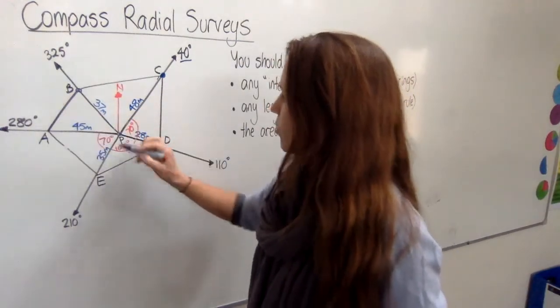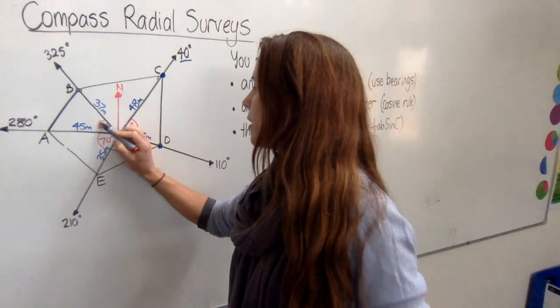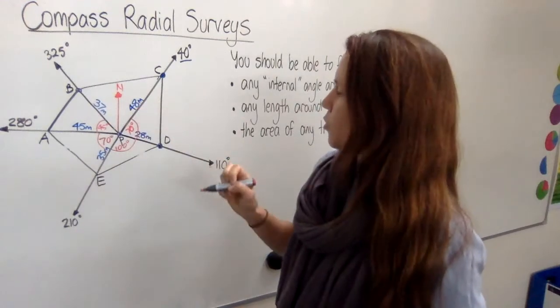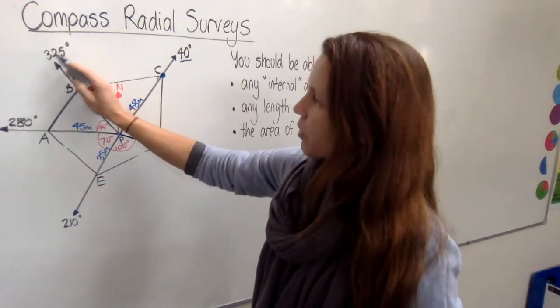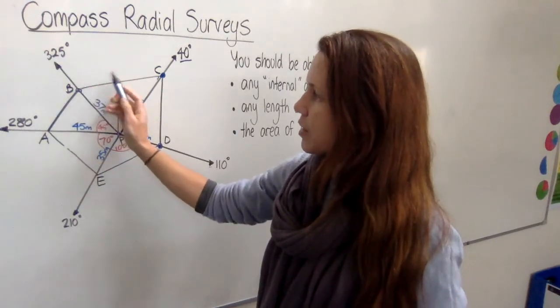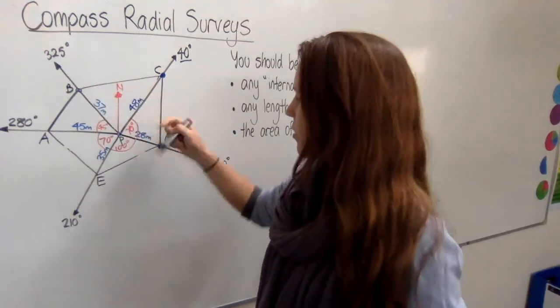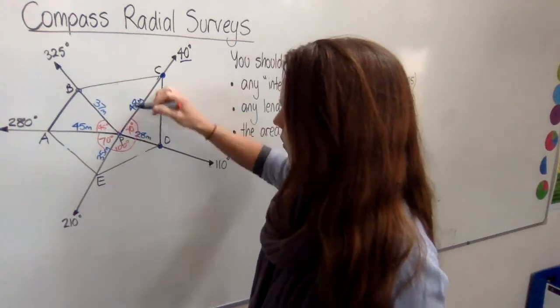From 280 up to 325 I've got 45 in there. This one at the top is a tiny bit more tricky, but this 40 degree bearing tells us that this is 40, and if that's 325 then the space in here must be 35. 40 plus 35 tells me that I've got 75 in here.